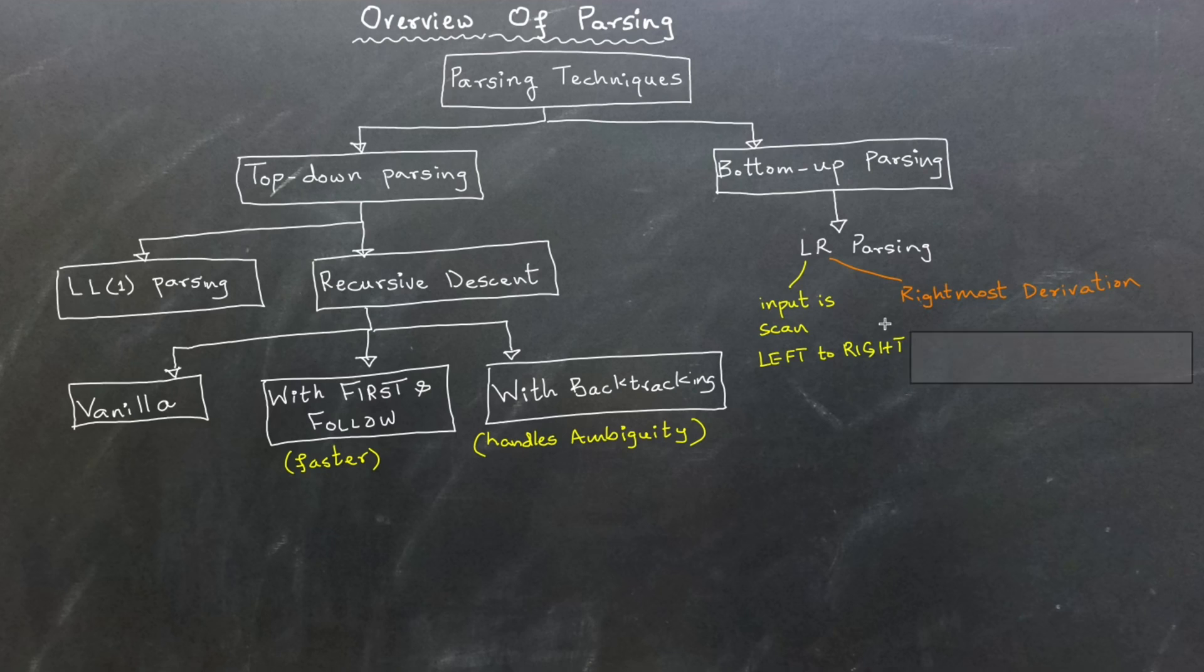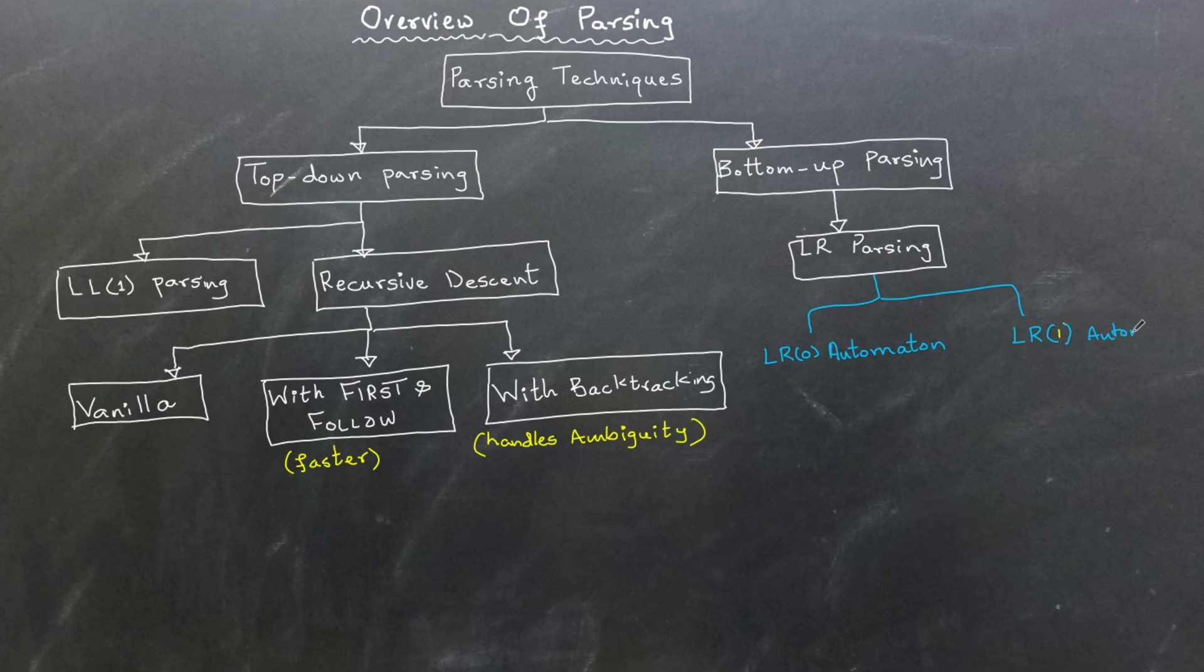These algorithms are based on two types of finite automata. The first is the LR(0) automaton, which represents the simplest form of bottom-up parsing and uses a deterministic finite automaton to construct the parse tree. The second is LR(1) automaton, which is a more advanced version that incorporates a single look-ahead token to guide parsing decisions.